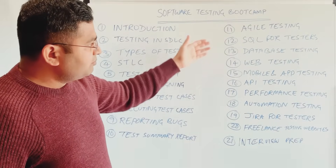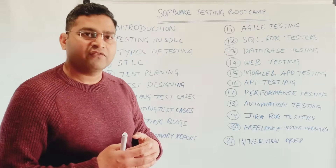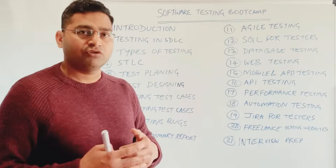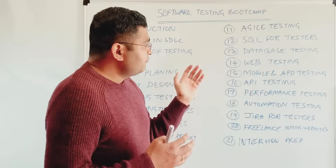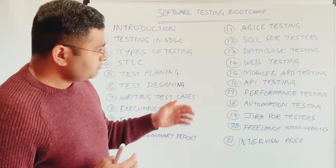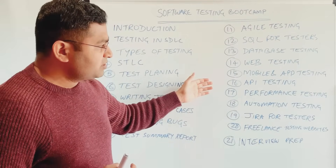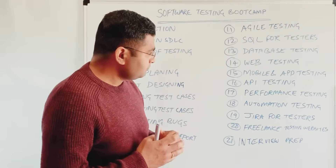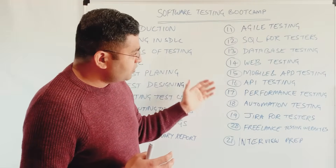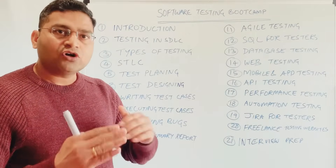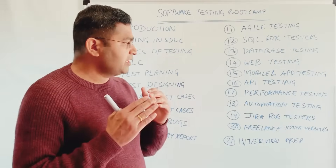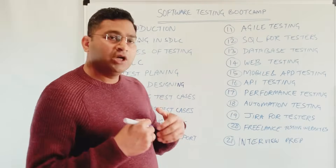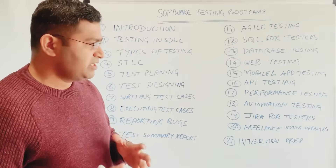The later part of the tutorial series will focus mostly on the technical aspects of software testing. For example, you need to know SQL, so I'll cover SQL and database testing. I'll also cover web testing, mobile and app testing, API testing, and performance testing. API testing is very important in current scenarios. For automation and performance testing, I won't go into deep detail on the tools, but I'll explain what performance testing and automation testing are and what tools can be used in a particular project.